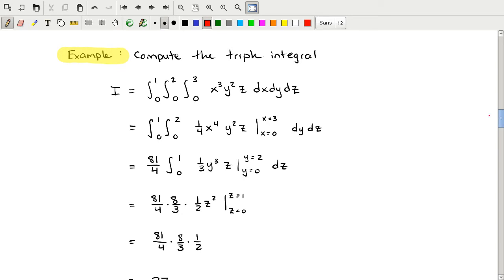For example, we'll compute the following triple integral. We have an integrand x^3 y^2 z. We have coordinates x, y, z, and we have bounds: x from 0 to 3 on the inside, y from 0 to 2 in the middle, and z from 0 to 1 on the outside.